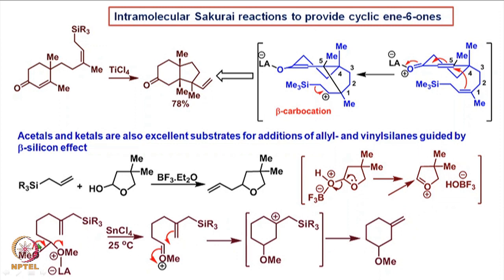Similarly, if we take an acetal in which the allylsilane moiety is embedded and treat with tin tetrachloride, one of the methoxy groups first coordinates with the Lewis acid and is then expelled to form this oxonium ion, which undergoes cyclization such that the cation is generated beta to the silicon, and the carbon-silicon bond breaks to release the cyclic molecule having an exomethylene.